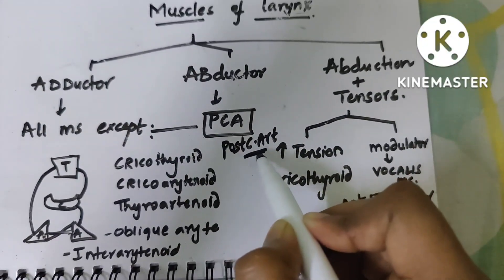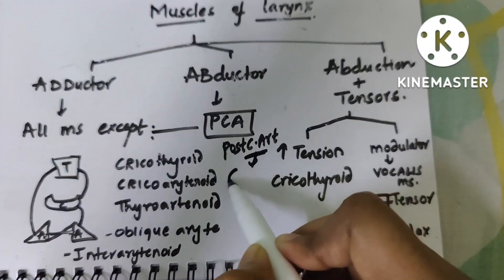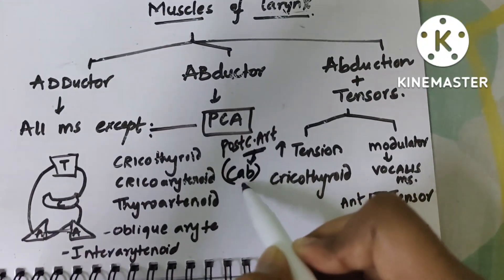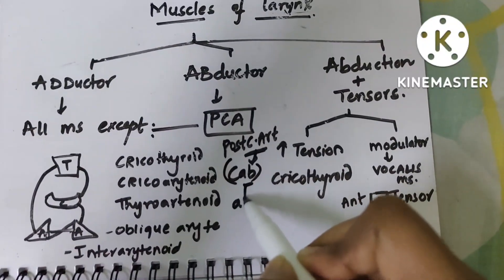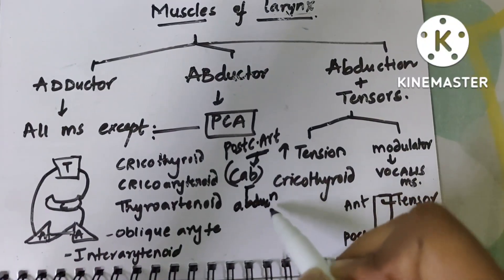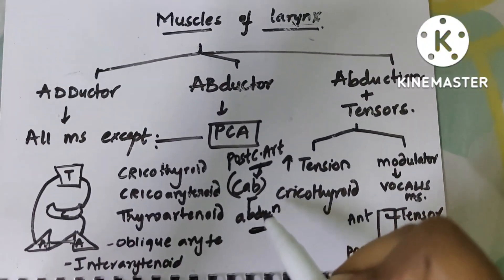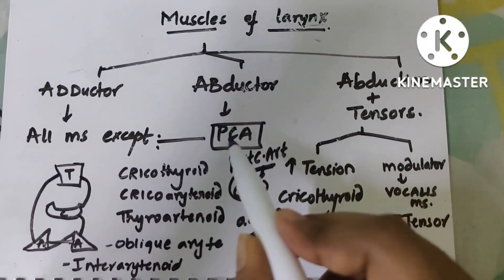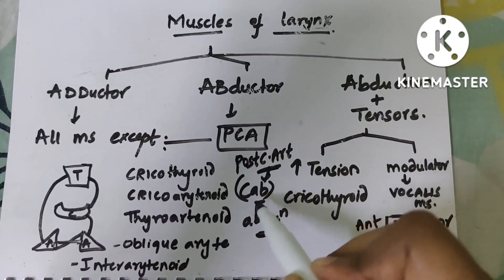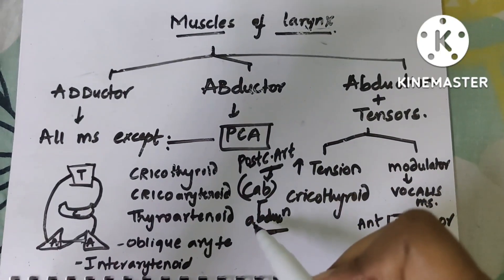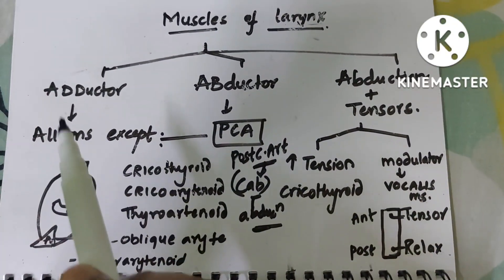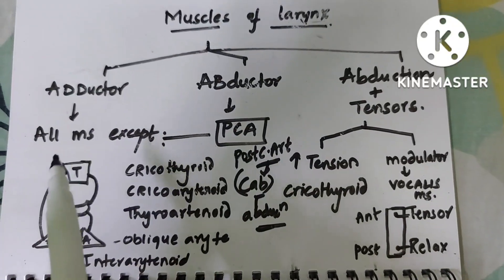Use the mnemonic 'CAB' — car meaning cab, that is abduction. The posterior cricoarytenoid is the only abductor of the larynx, while the rest of the muscles are adductors.